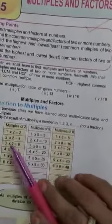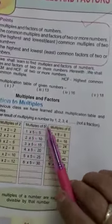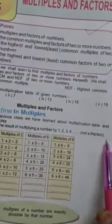If a multiple is result of multiplying a number by 1, 2, 3, 4, not a fraction.